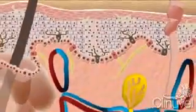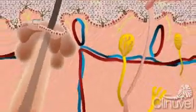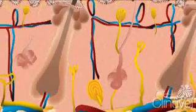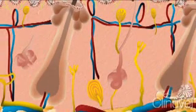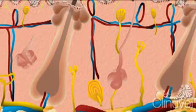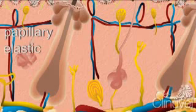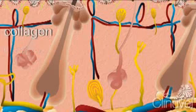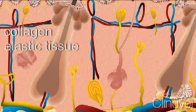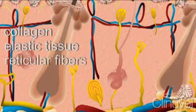The dermis, also called the corium, connects the epidermis to the rest of the body. The dermis consists of two layers, the papillary and elastic, both containing three types of tissue: collagen, elastic tissue, and reticular fibres.